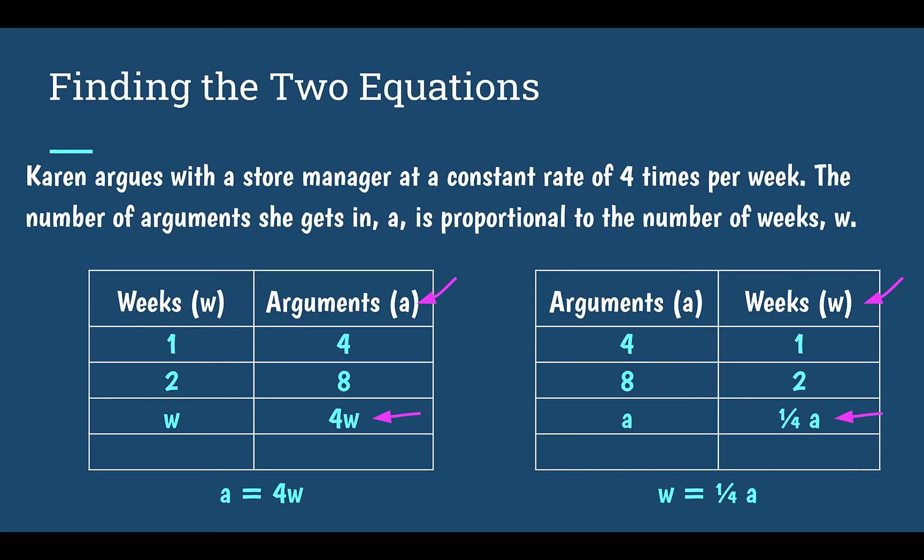Notice, our two equations are very similar, as they should be. The only difference is, one of them you're going from weeks to arguments, the other one you're going from arguments to weeks. And our constants of proportionality are related as well. They are reciprocals of each other.